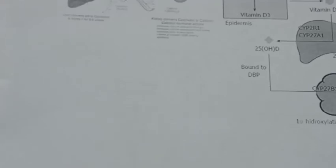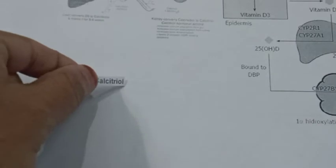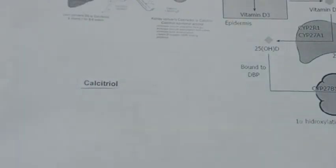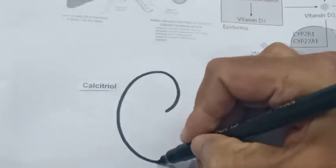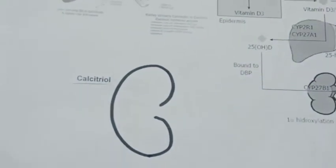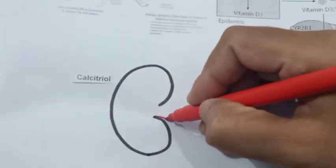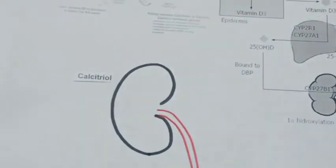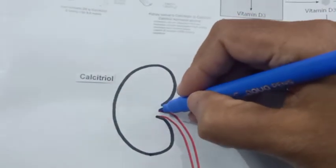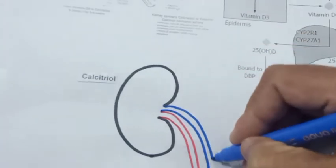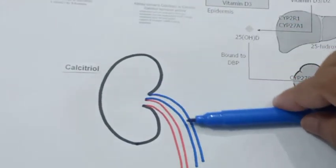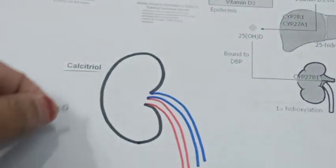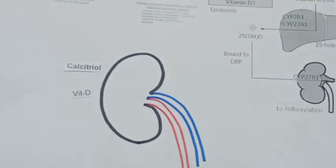In this video clip we will think about calcitriol, which is another hormone produced by the kidney. The kidney is a bean-shaped organ; the renal artery enters the kidney and the renal vein leaves the kidney. Oxygenated blood is supplied by the renal artery and deoxygenated blood leaves the kidney.